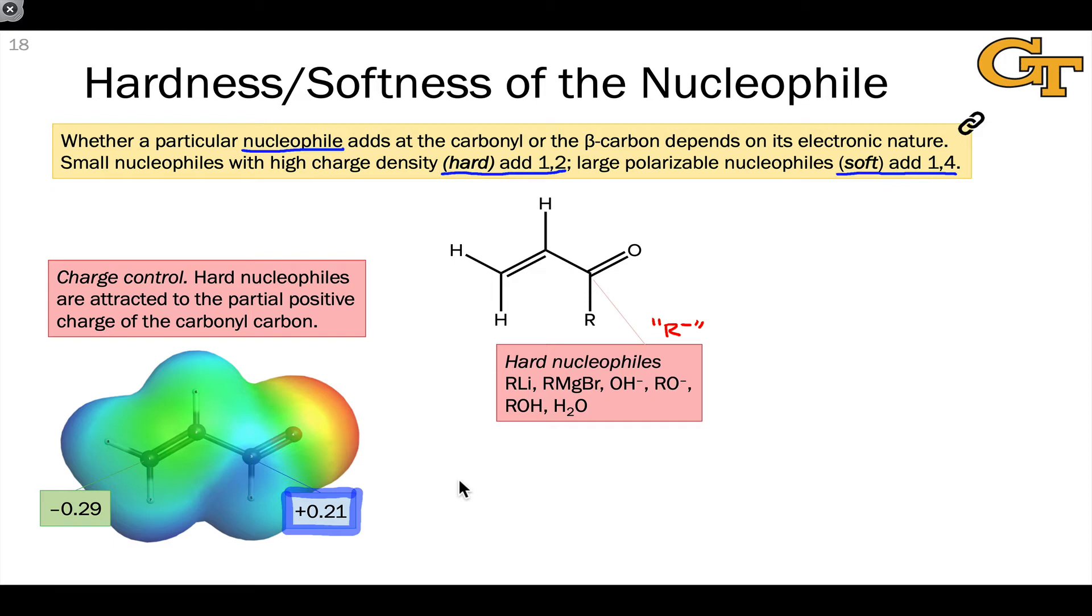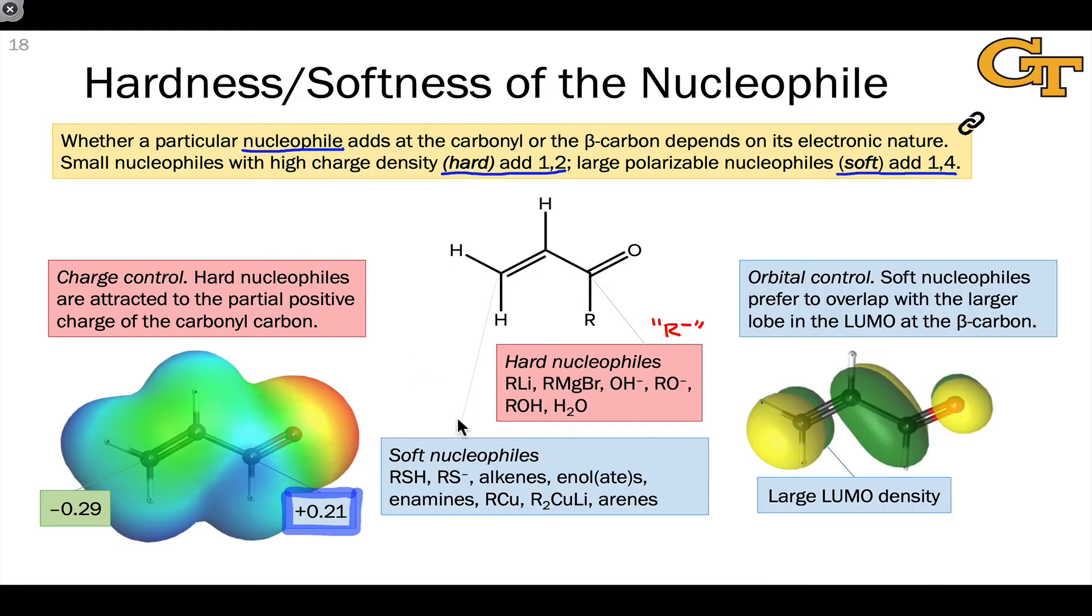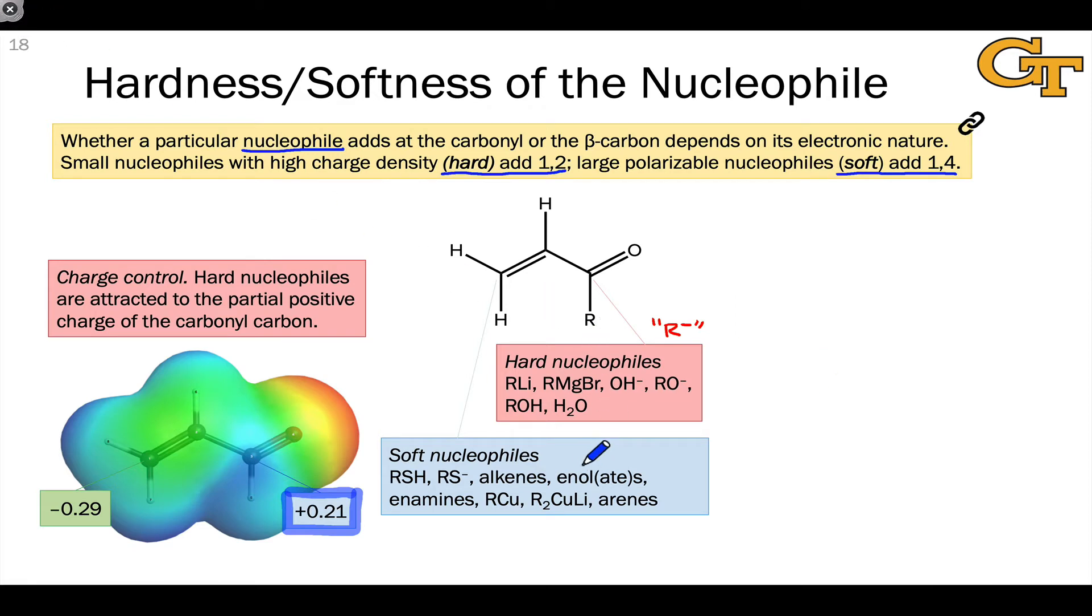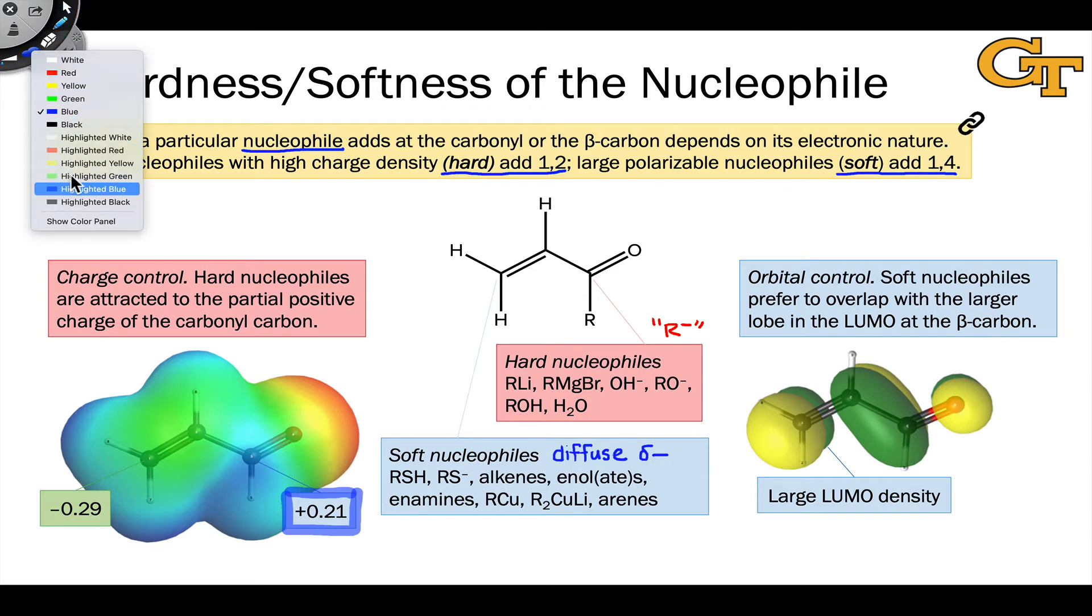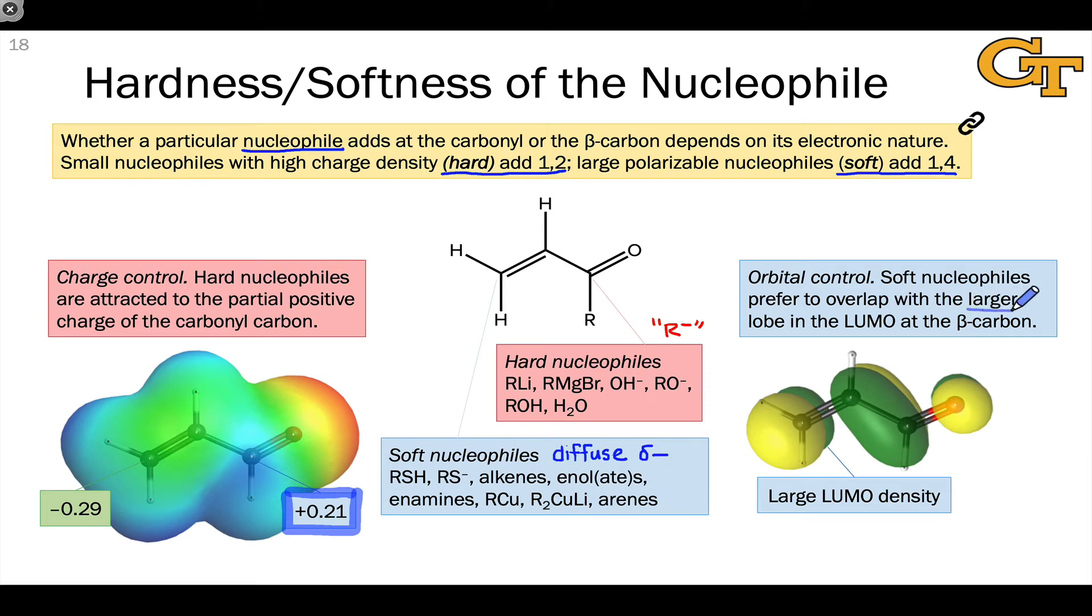Soft nucleophiles are diffuse, resonance stabilized. They have negative charge that is spread out over a relatively large number of atoms, and as such, they're much less susceptible to charge control. Soft nucleophiles add selectively in a conjugate or 1,4 fashion with most unsaturated carbonyl compounds, and the reason for this is what we might call orbital control. The selectivity of a soft nucleophile is driven by its overlap with the lowest unoccupied molecular orbital of the unsaturated carbonyl compound.